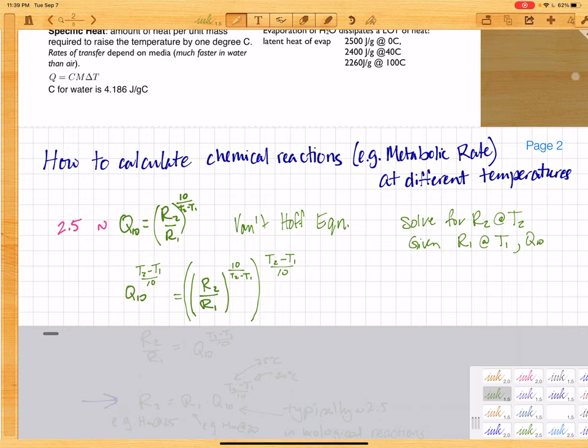Now when you look at this Van't Hoff equation, what it's doing is describing how fast the reaction increases per 10 degrees change in temperature. But you can calculate it between any two temperatures if you just provide the T2 and the T1.